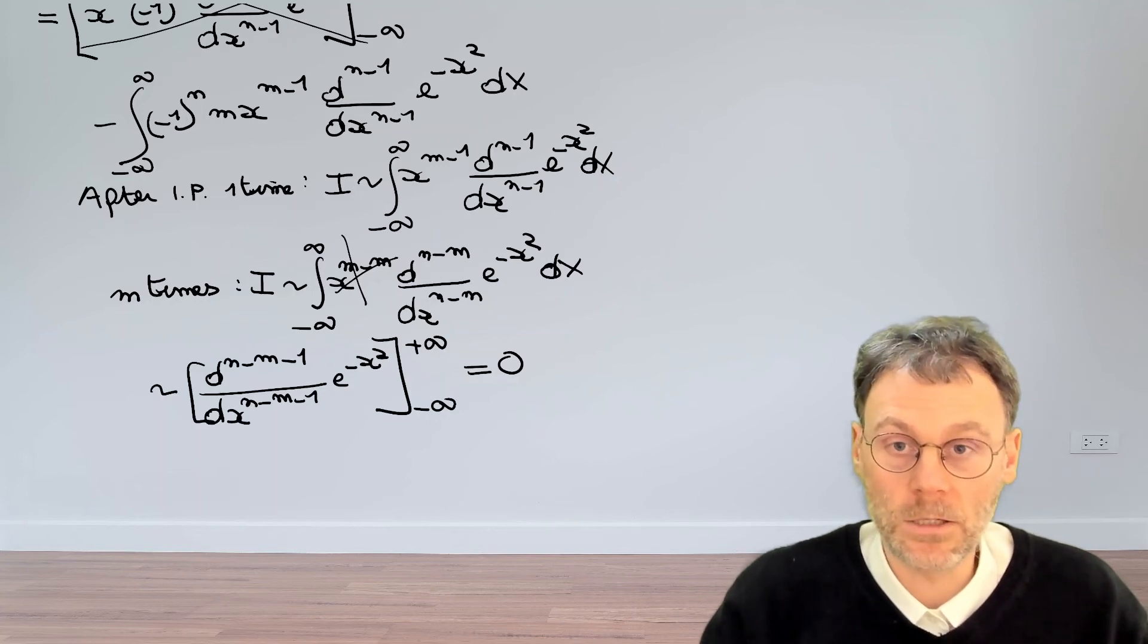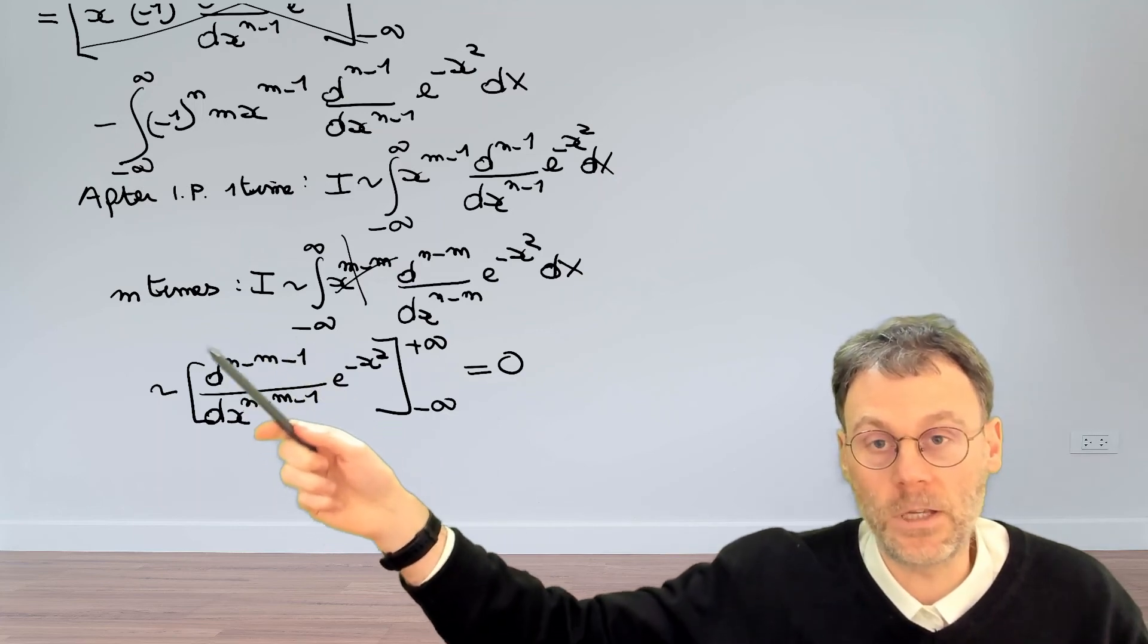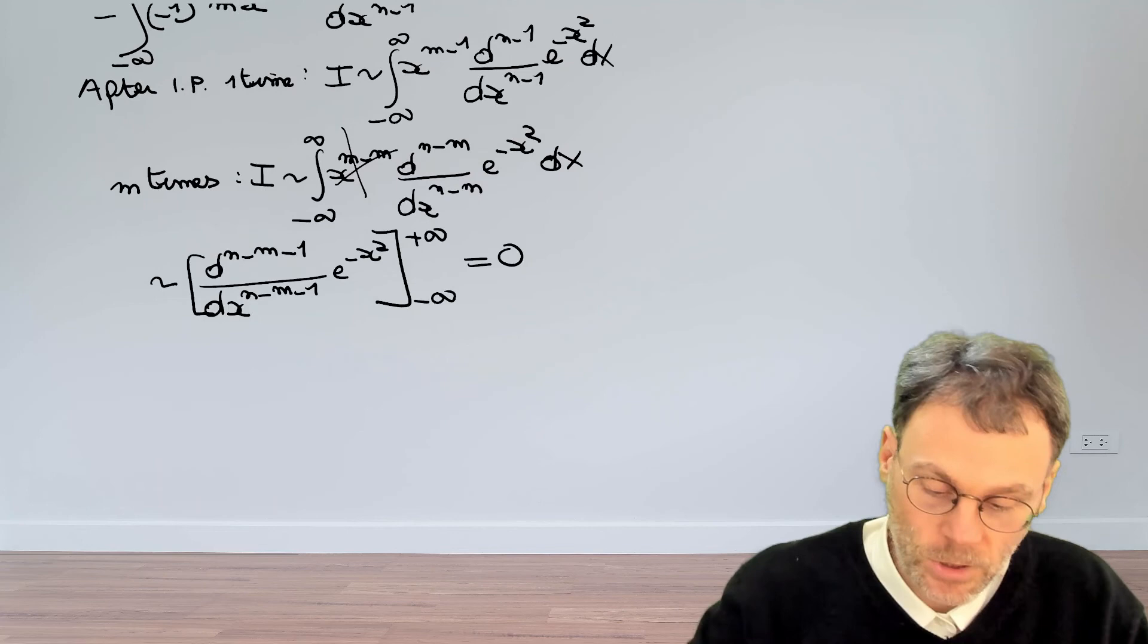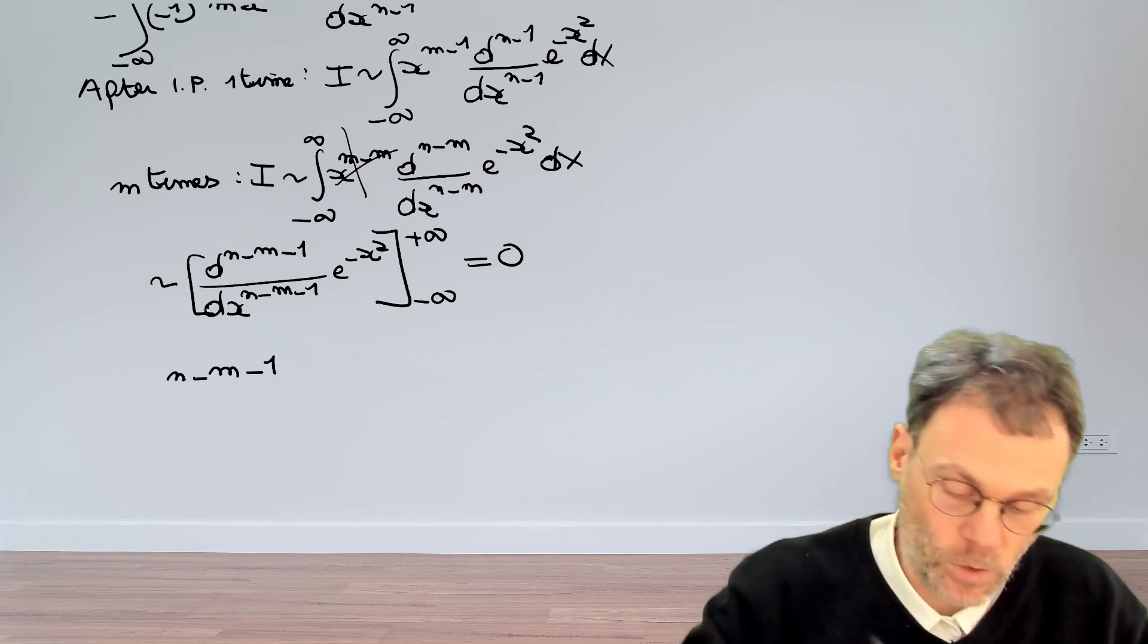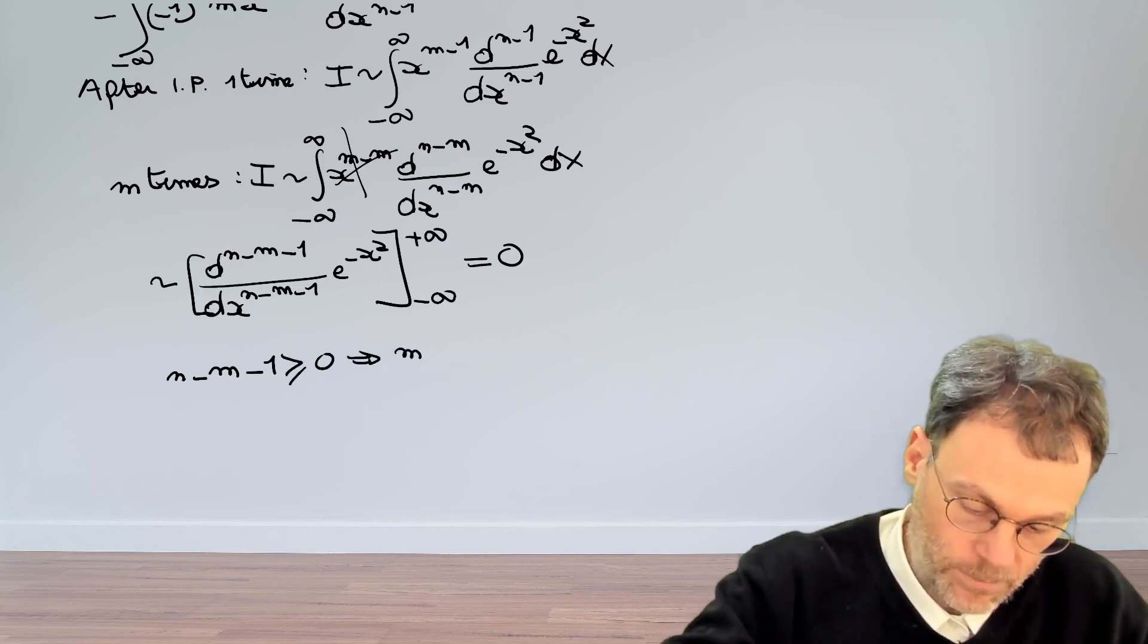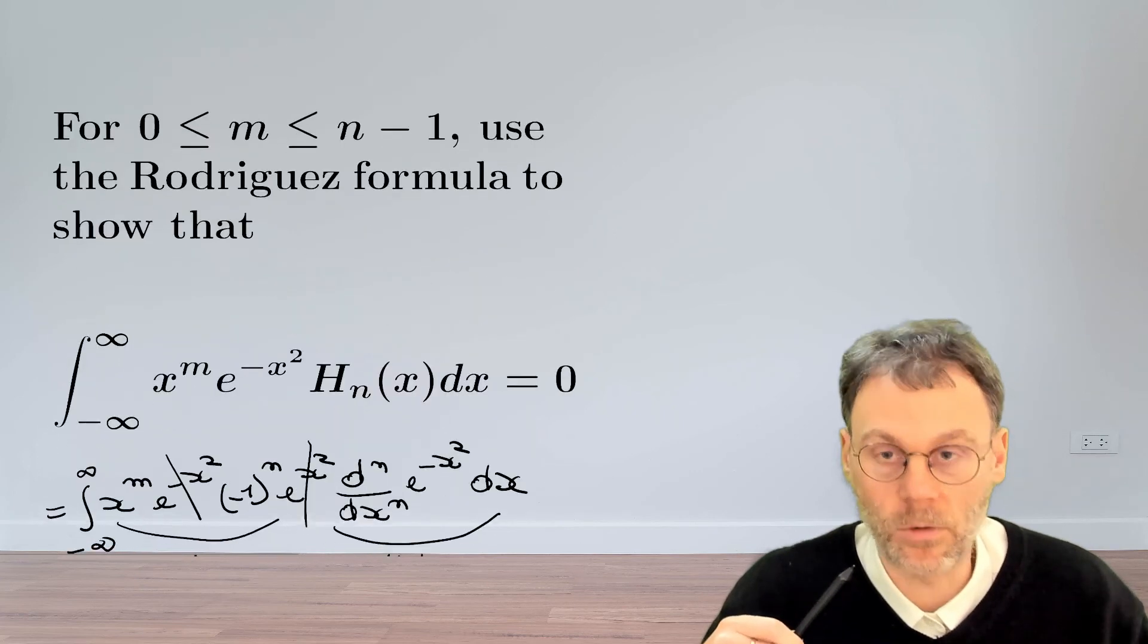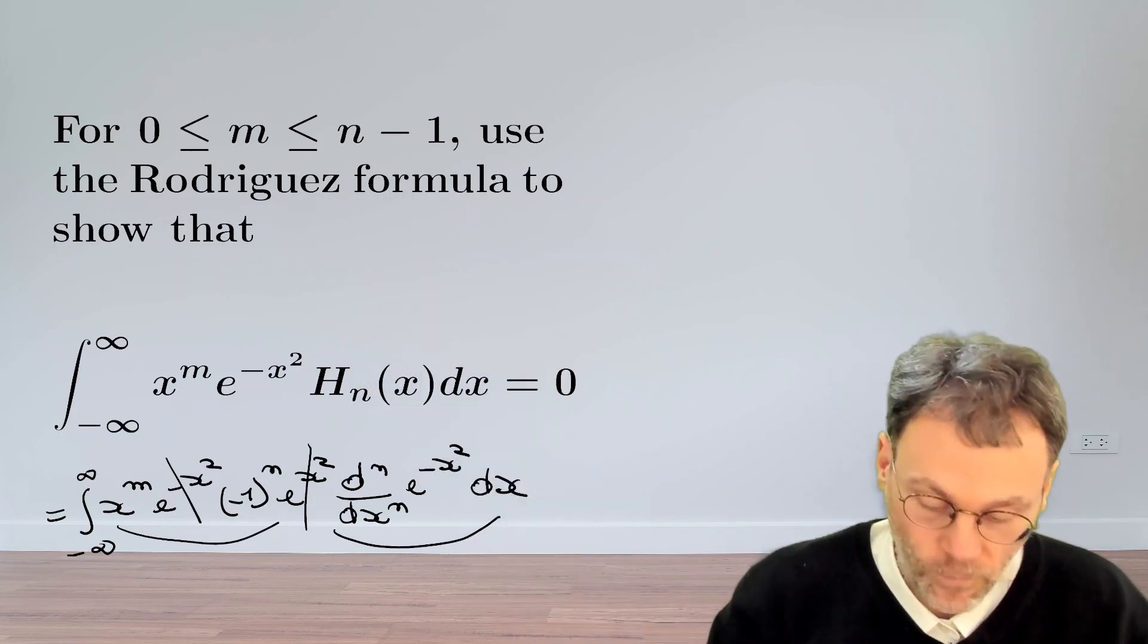There's some small details we need to take care of. First of all, this order of the derivative here. We should make sure that we do not take a derivative minus two times, for example. That would not make any sense. So we need to have that n minus m minus 1, that that is a positive number, which obviously means that m should be smaller than or equal to n minus 1. Which is exactly, if you look back at our question here, which is exactly this condition here. So that condition is there for a very good reason.